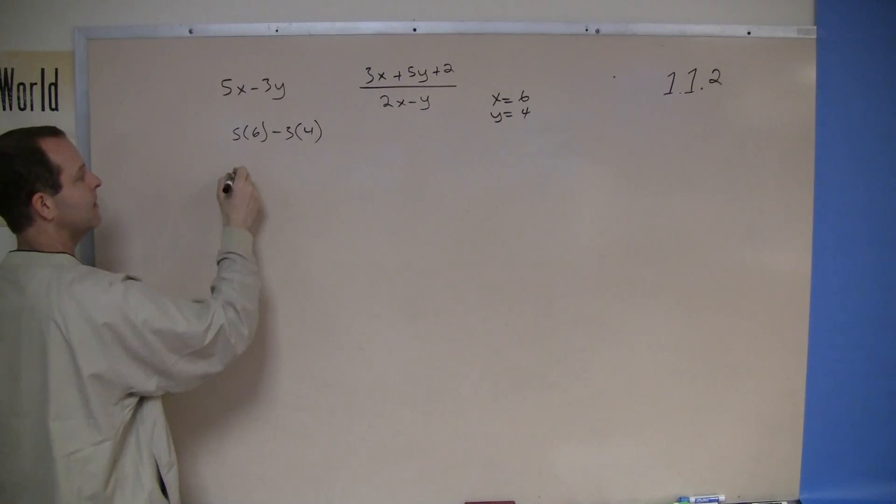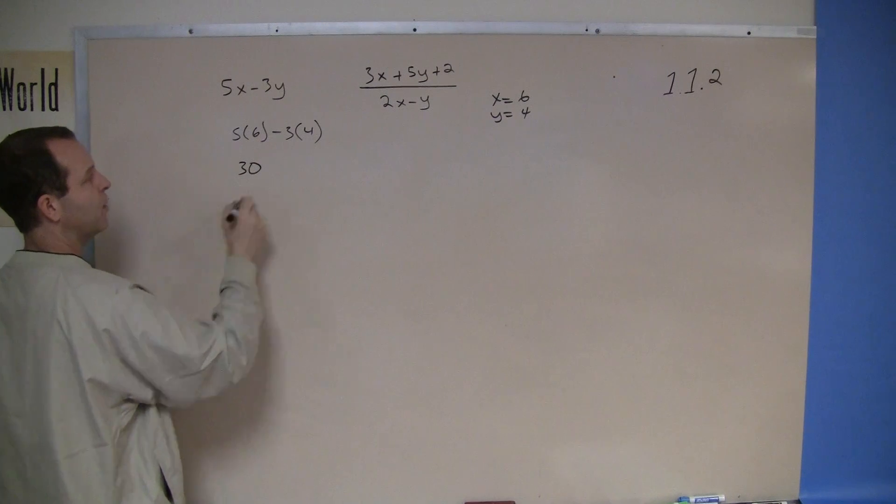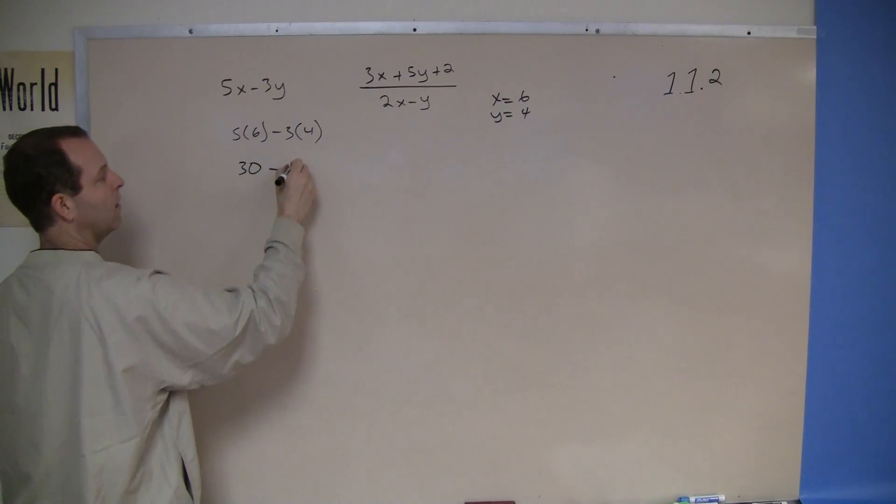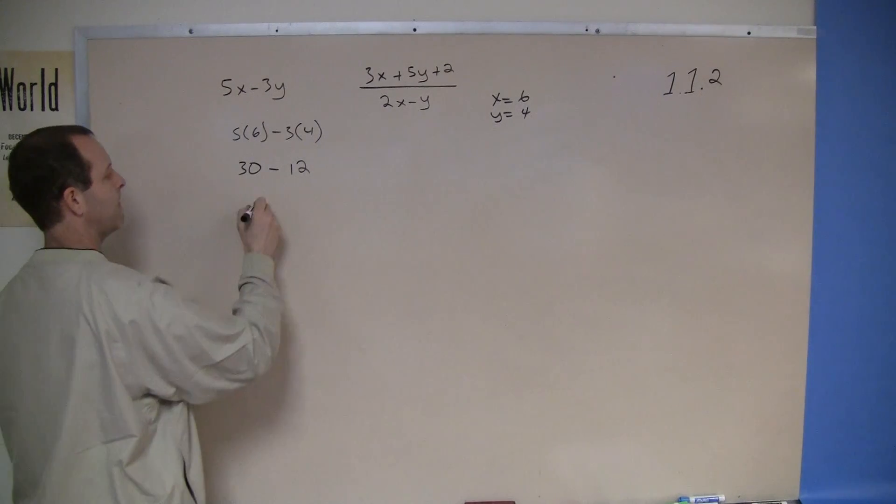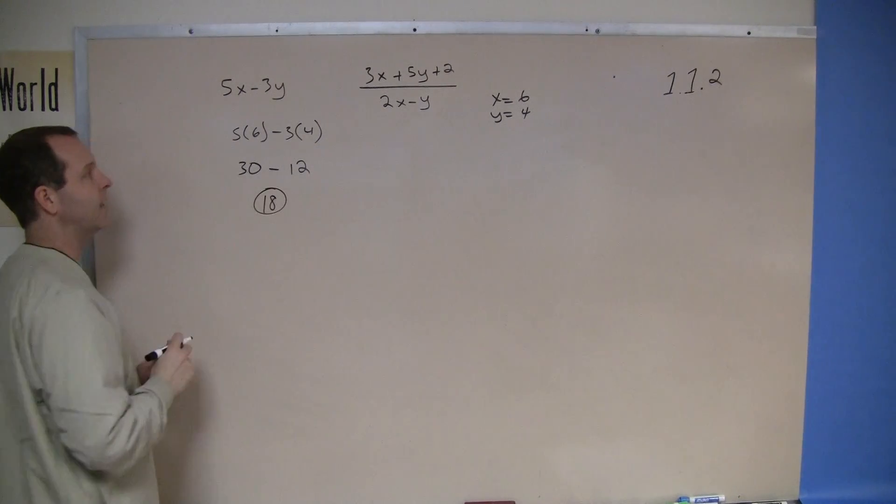5 times 6 is 30, minus 3 times a 4, a 12. Then 30 take away 12 is 18.